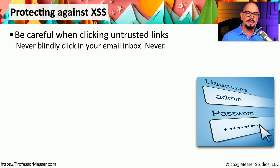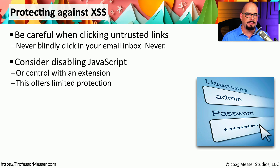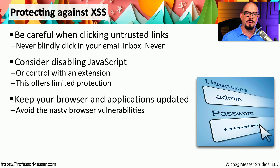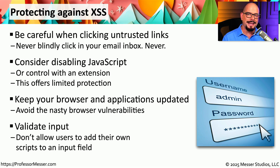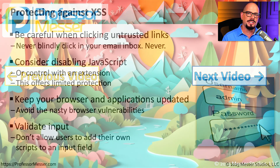One way to prevent a cross-site scripting attack is to prevent the script from running at all — never click links inside email messages or on untrusted web pages. You could consider disabling JavaScript, but it's not a practical option for modern browsing. Instead, use third-party utilities that detect and stop these exploits in real time. Keeping browsers and applications up to date also helps. Ultimately, application developers must validate all inputs to ensure no scripts — malicious or otherwise — can be executed, making the application secure against cross-site scripting attacks.